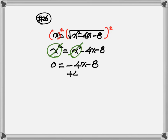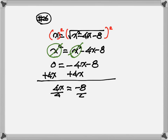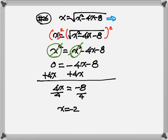Then, get rid of the negative 4x: plus 4x on both sides. So, 4x is equal to negative 8. Divide everything by 4, so x is equal to negative 2. But before you stop, let's go back to the original equation: x is equal to square root of x squared minus 4x minus 8. If x equals negative 2, that gives negative 2 equals the square root of something. Remember from problem 12: square root cannot equal a negative number. So, this will be no solution.